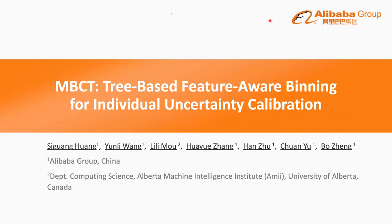In many machine learning applications, such as click-through rate prediction, we assume that each sample is an observation under a different probability distribution. With positive or negative observations, we want to not only predict which event is more likely to happen, but also make the prediction close to the true probability of the event.